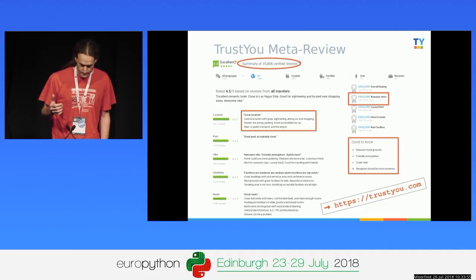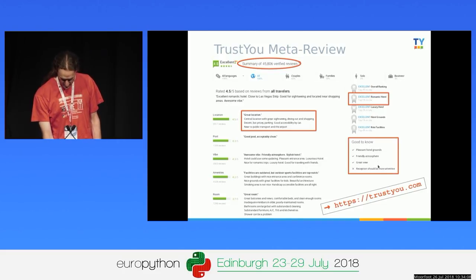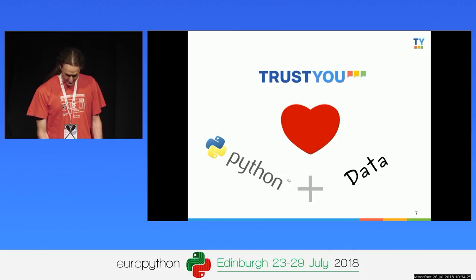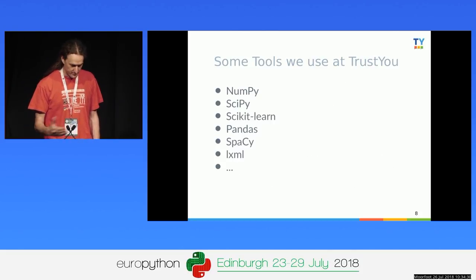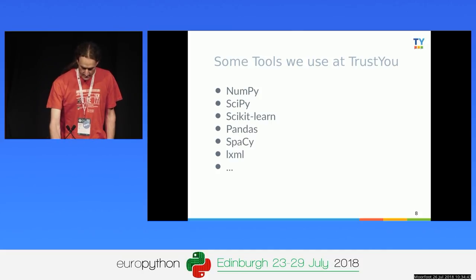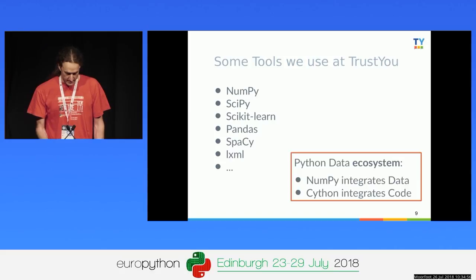We build summarized information — a meta review summarizing what 45,000 people have said about a hotel: what's special, what people like, what they dislike. You can go to trustyou.com, enter a hotel name, and see this. TrustYou loves Python and does all data processing in Python. We use NumPy, SciPy, scikit-learn, Pandas, Spacy, LXML. Many of these tools actually use Cython or are implemented in Cython — some completely, others mostly.